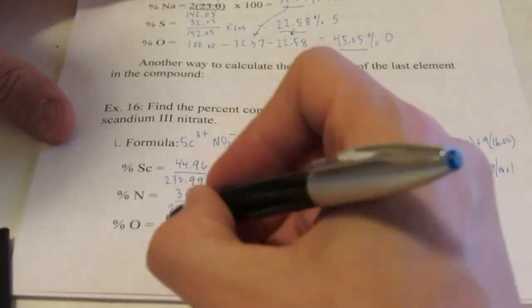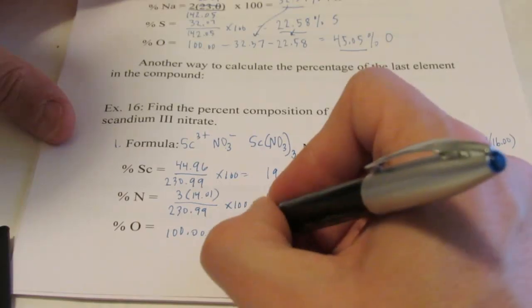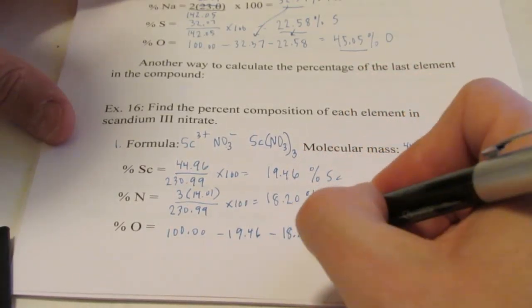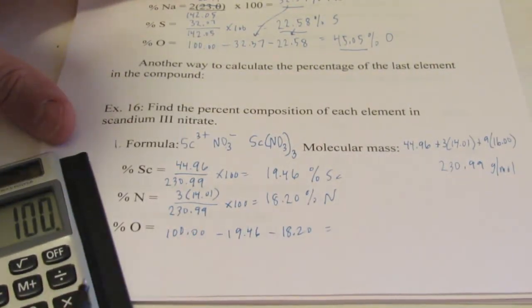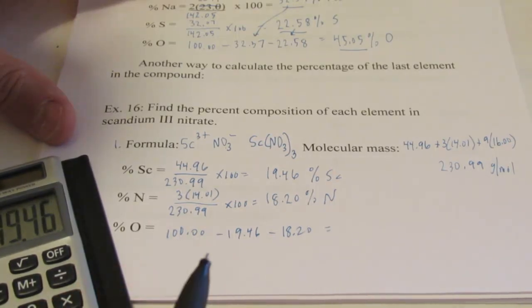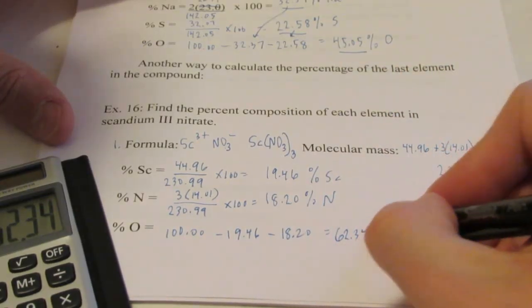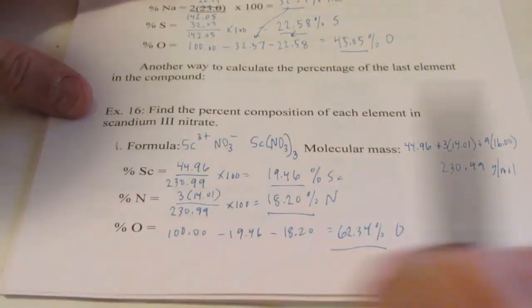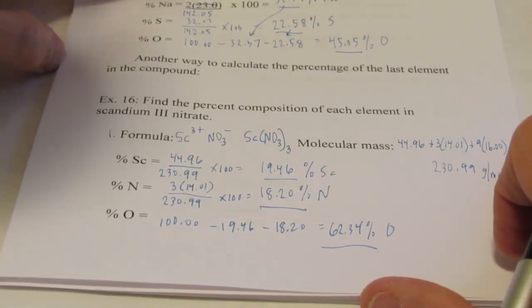For the last element, I'll use the easy way — start with 100% and subtract the percentages of the other elements: 100 minus 19.46 minus 18.20 gives 62.34% oxygen. Pretty straightforward.